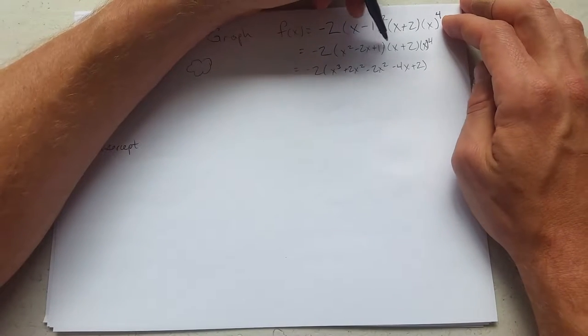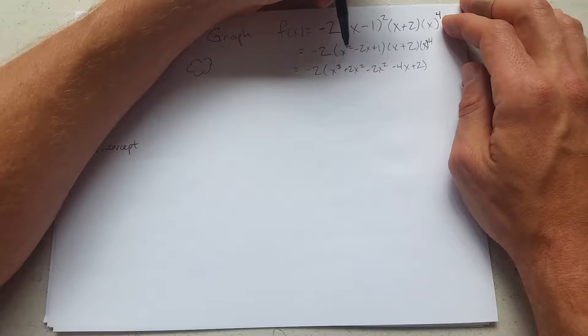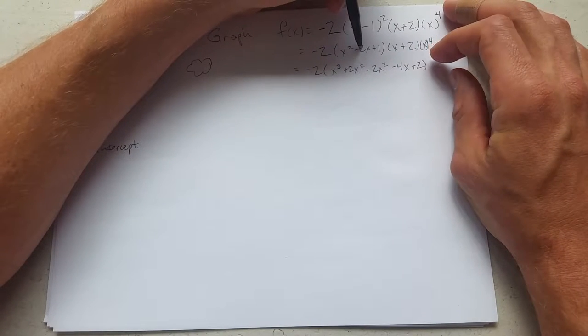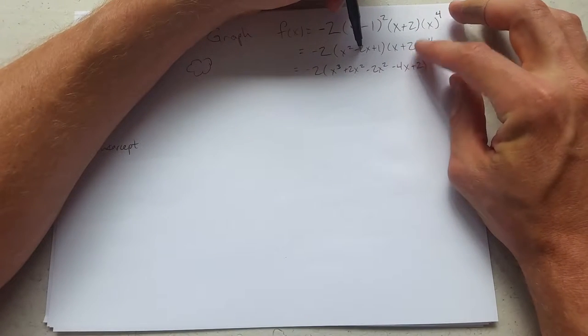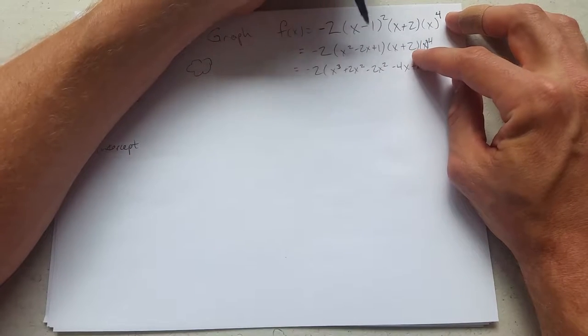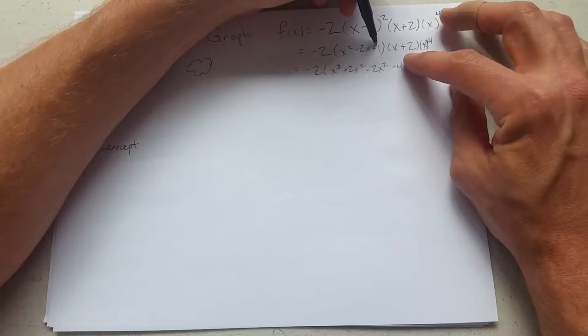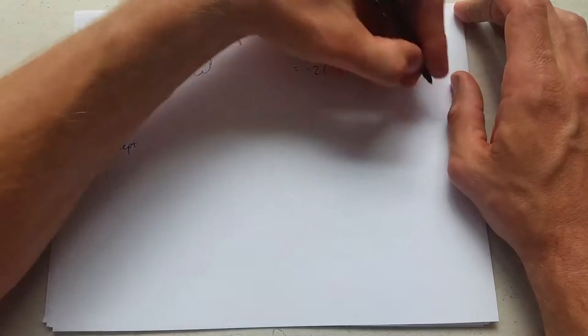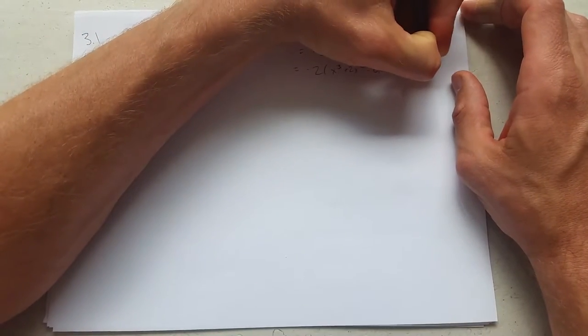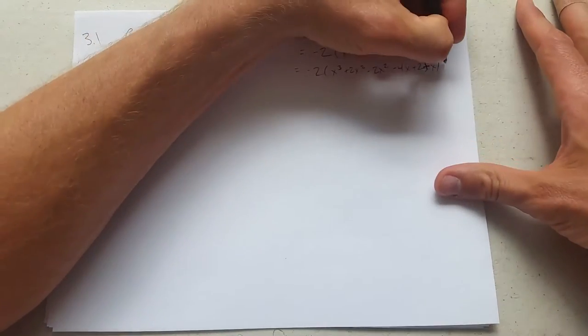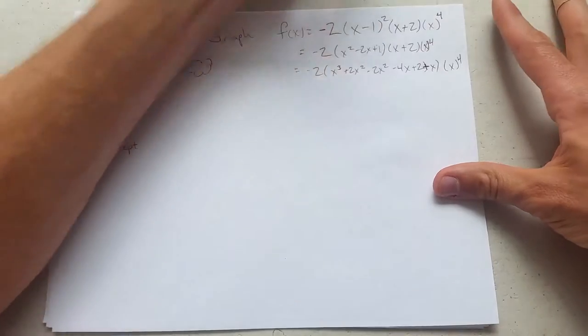So I should have gotten 6 terms out of there. I'm missing one. And what are we missing? Negative 2 times x, negative 2x squared. We have a negative 4x, got that, plus 2 plus 1 times x. We have another plus x here. And we just bring down the x to the 4th.